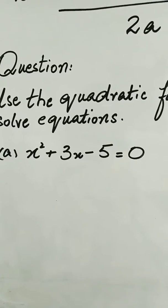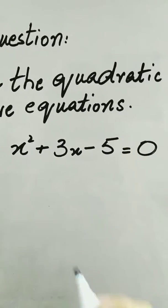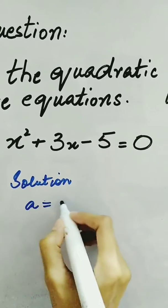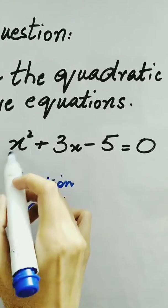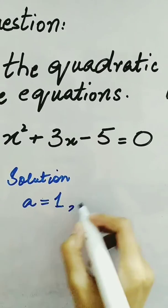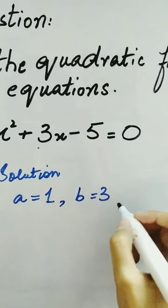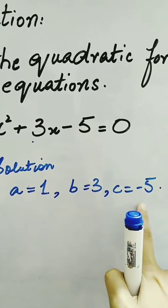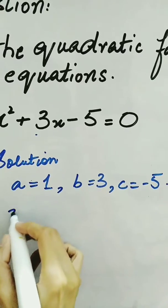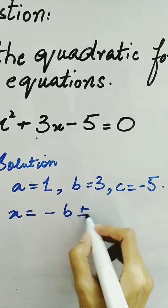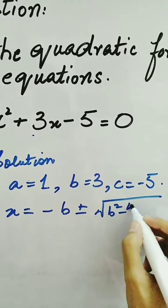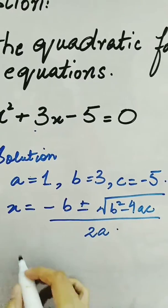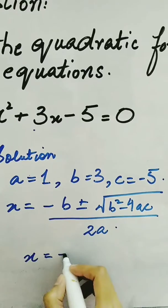The first question given here is x squared plus 3x minus 5. Here the value of a is 1, as there is no coefficient other than 1 with x squared. The value of b is equal to 3, as there is 3 with x, and the value of c is minus 5. Remember, we take the sign here. The formula is x equals minus b plus minus under root b squared minus 4ac over 2a. Now we know the values of a, b, and c, and we simply put them into the formula.